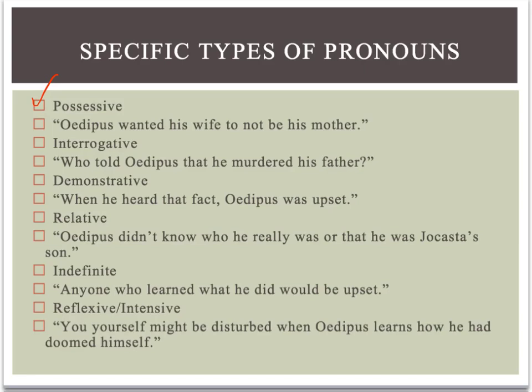Let's look at this example sentence: Oedipus wanted his wife not to be his mother. What that sentence is really saying is Oedipus wanted Oedipus' wife not to be Oedipus' mother, but it sounds pretty bizarre to say it that way, so we use some possessive pronouns. There are two, and they're both the word his. We're talking about his wife and his mother. The pronoun gets used twice because Oedipus ends up in a pretty awkward situation where his wife is indeed his mother, which is sad.